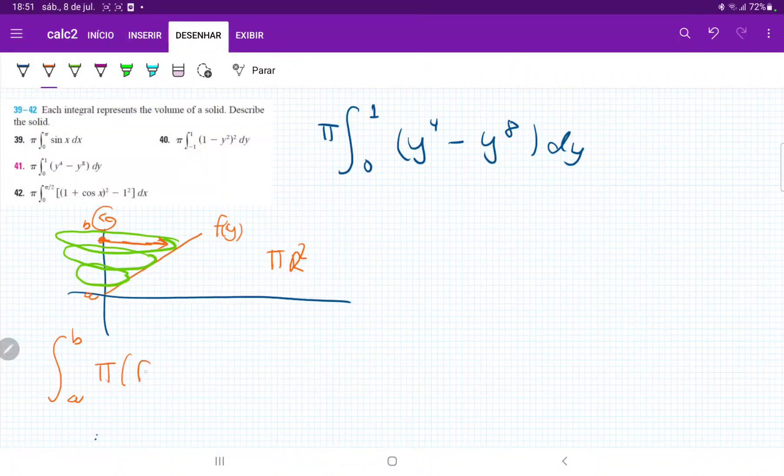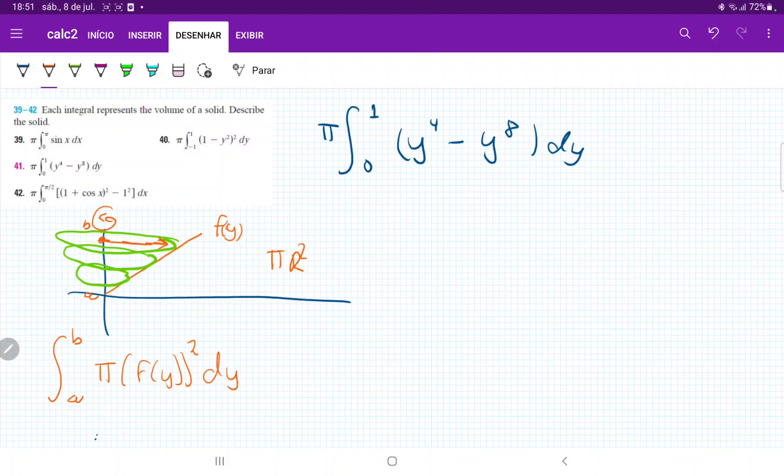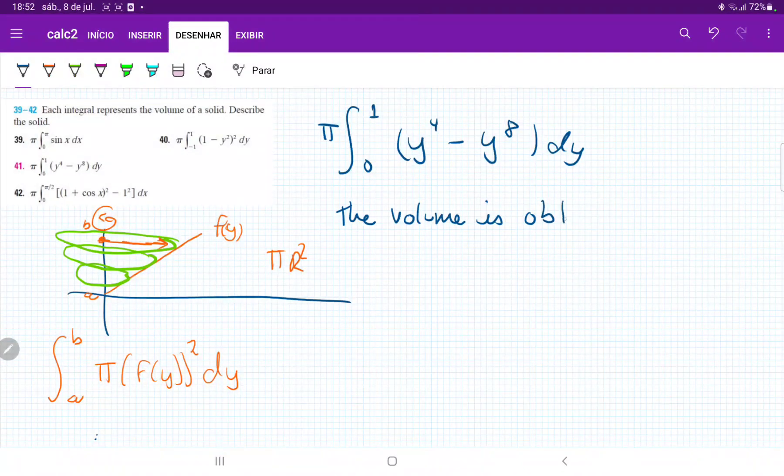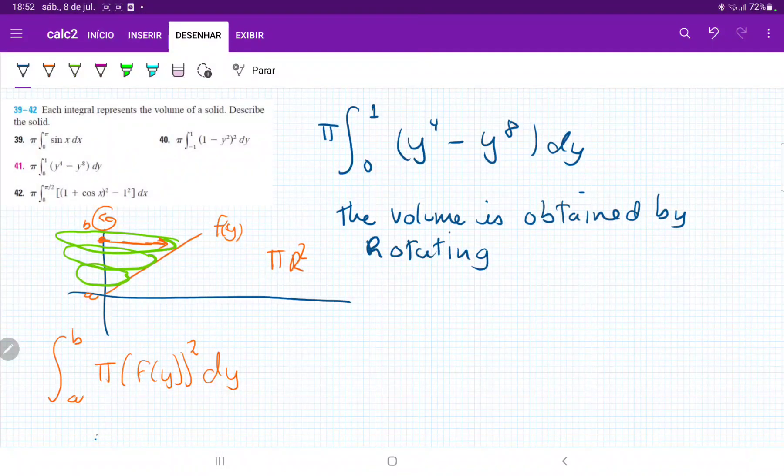So π times f(y), all of this squared, times dy. So if we compare it here, we can see that we can describe our volume as such. The volume is obtained by rotating the curve. And in this case, because it is a function of y, we say x equals.